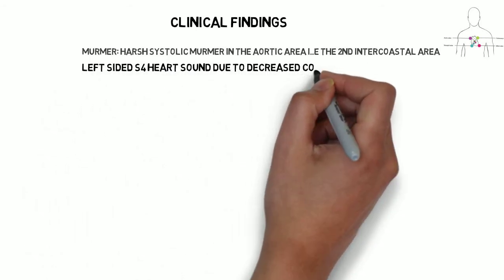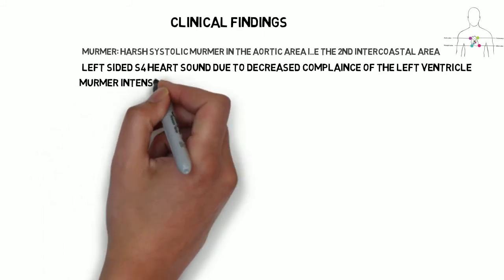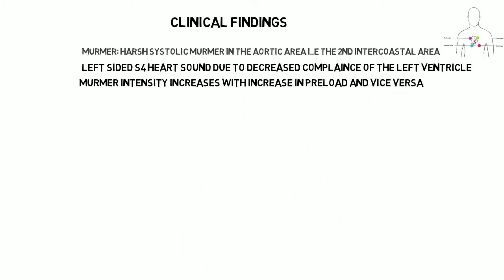There is also production of a left-sided S4 heart sound. The S4 heart sound is an abnormal sound heard when the atria contract against a non-compliant left ventricle. In aortic stenosis, the left ventricle is hypertrophied, making it non-compliant, producing the S4 sound. Importantly, both the murmur and the S4 heart sound increase whenever there is an increase in preload, and vice versa.